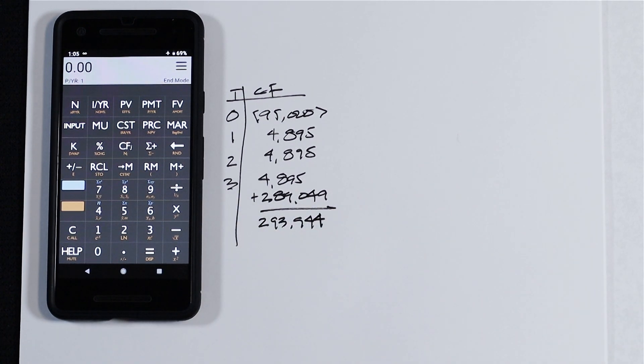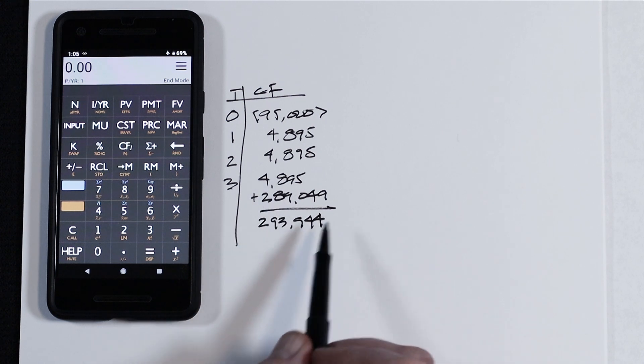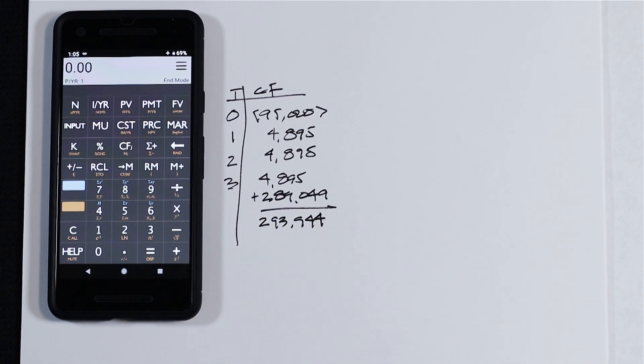And as I said on the previous problem, if you're entering cash flows with the app, it's a good idea to do a side calculation of your final year, whatever it is, these examples just have three years, and have that sum of cash flows and net sales proceeds or pre-tax sales proceeds pre-calculated before you open up the cash flow menu.